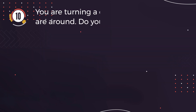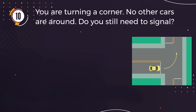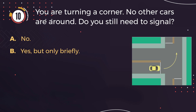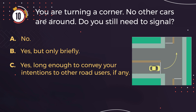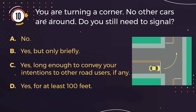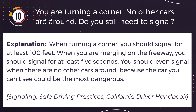Number 10. You are turning a corner. No other cars are around. Do you still need to signal? A: No. B: Yes, but only briefly. C: Yes, long enough to convey your intentions to other road users, if any. D: Yes, for at least 100 feet. The correct answer is D: Yes, for at least 100 feet. Explanation: When turning a corner, you should signal for at least 100 feet. When merging on the freeway, you should signal for at least 5 seconds. You should even signal when there are no other cars around, because the car you can't see could be the most dangerous.